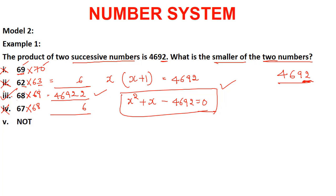Remember: whenever you get these kinds of questions, do not attempt to solve with quadratic equations as it will consume too much time. The smart way is the unit digit method. If you get unit digit 2 in more than one option, you must verify both by actual multiplication before concluding.